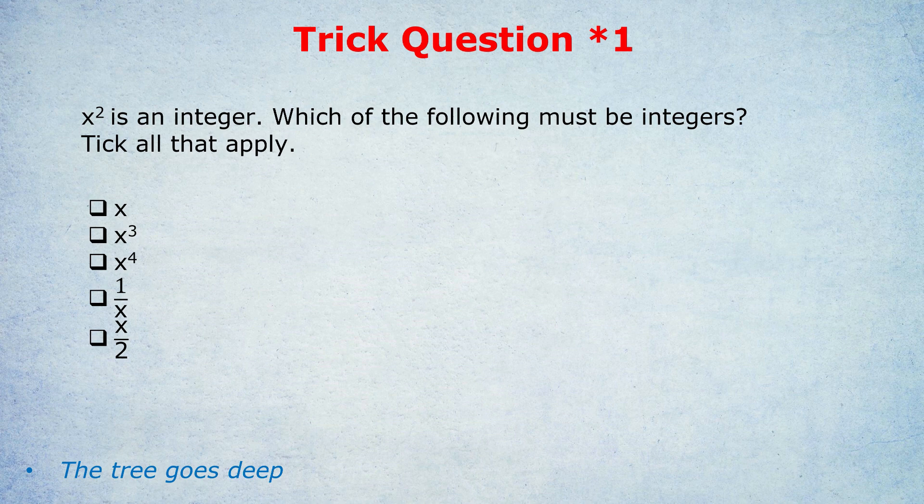Furthermore, if x was a radical like square root of 2 or square root of 3, the second box would also be wrong. If x is square root of 2, then the square root of 2 cubed is root 2 times root 2 times root 2. Root 2 times root 2 is 2, and 2 times root 2 is just 2 root 2, which is not an integer. So with that possibility, A and B, along with D and E, aren't necessarily integers.